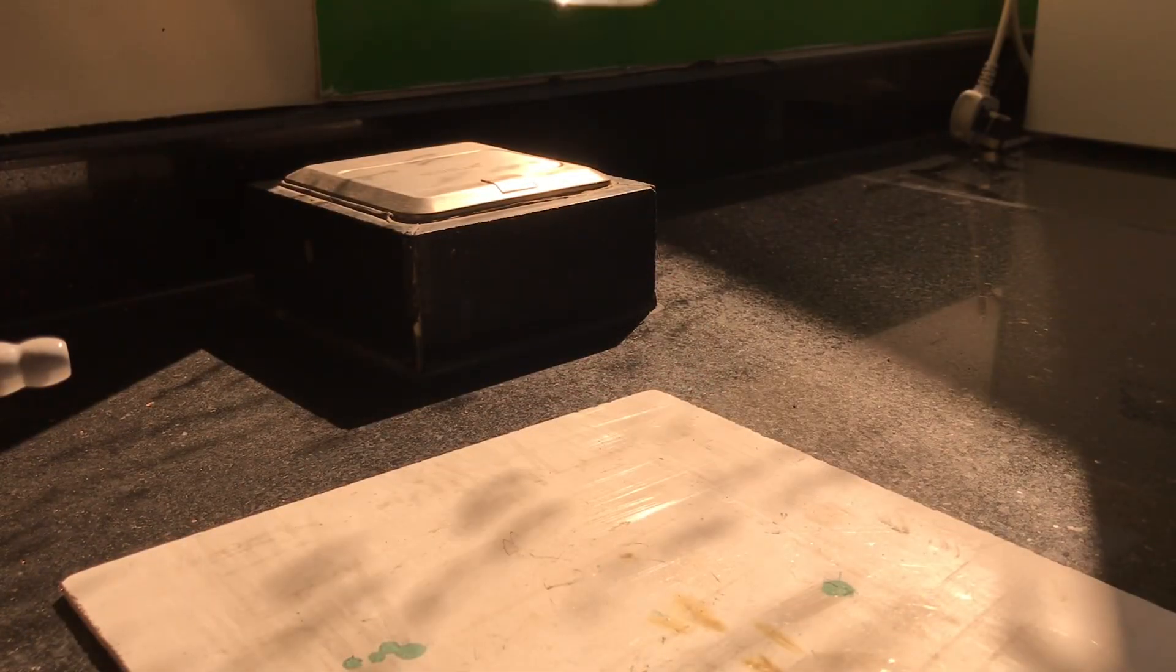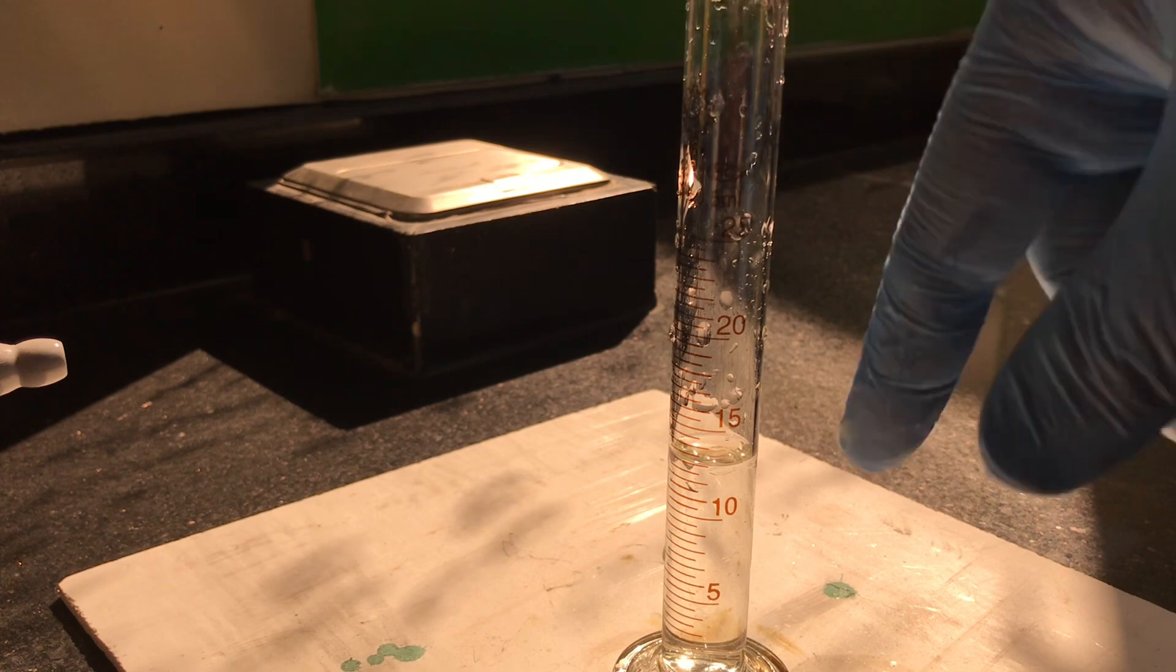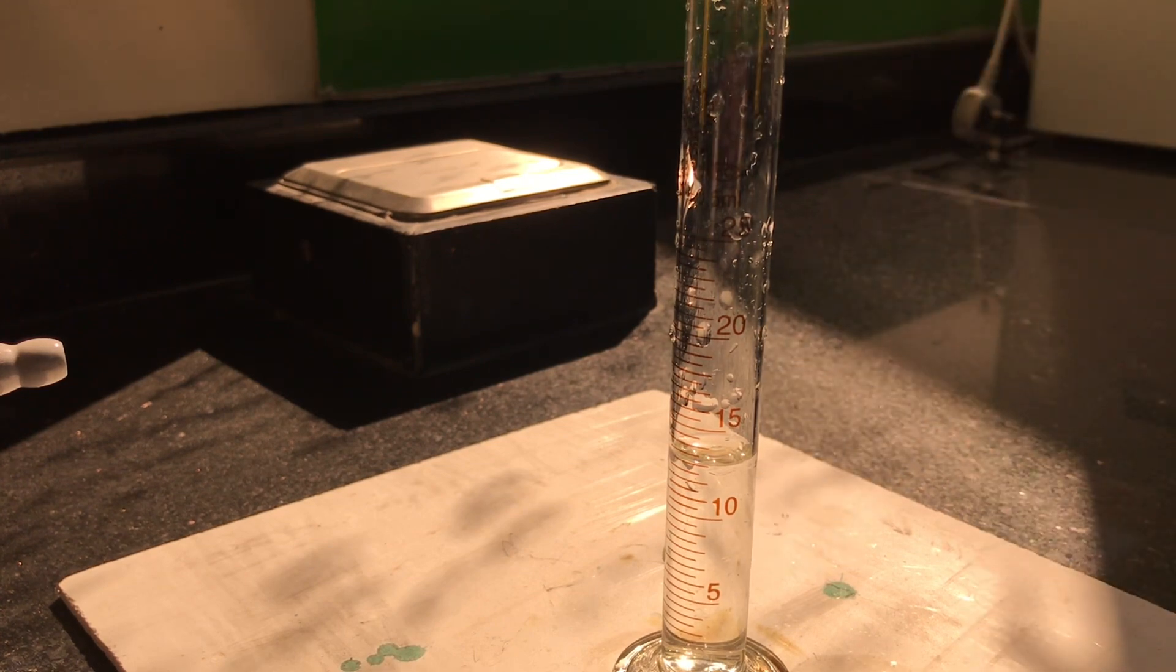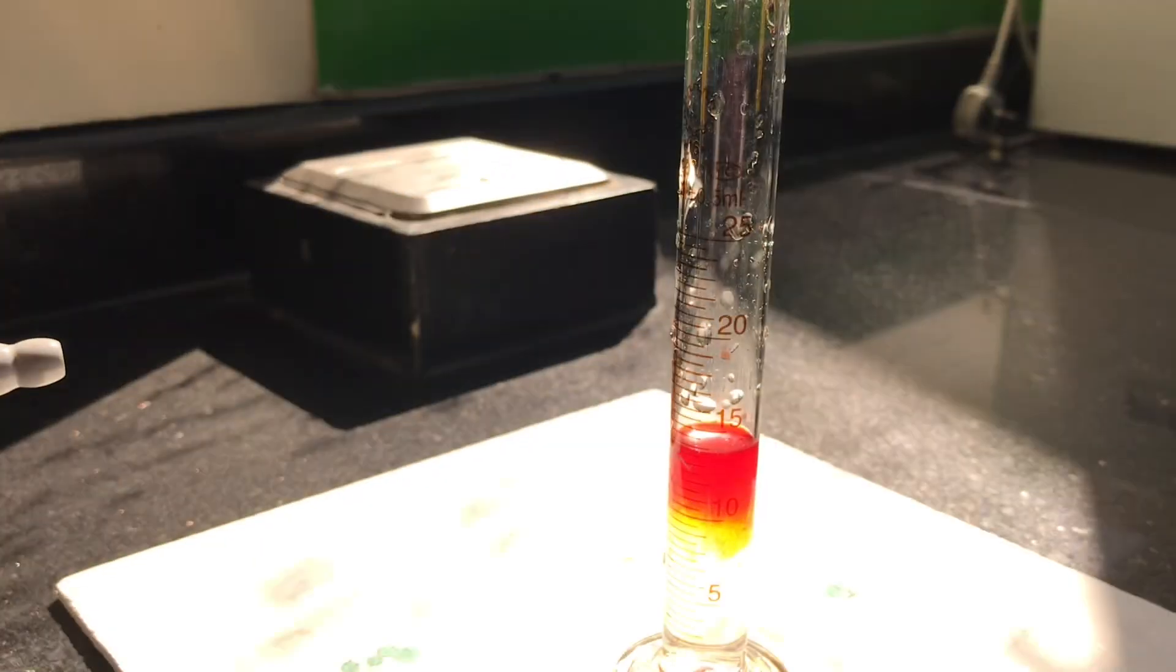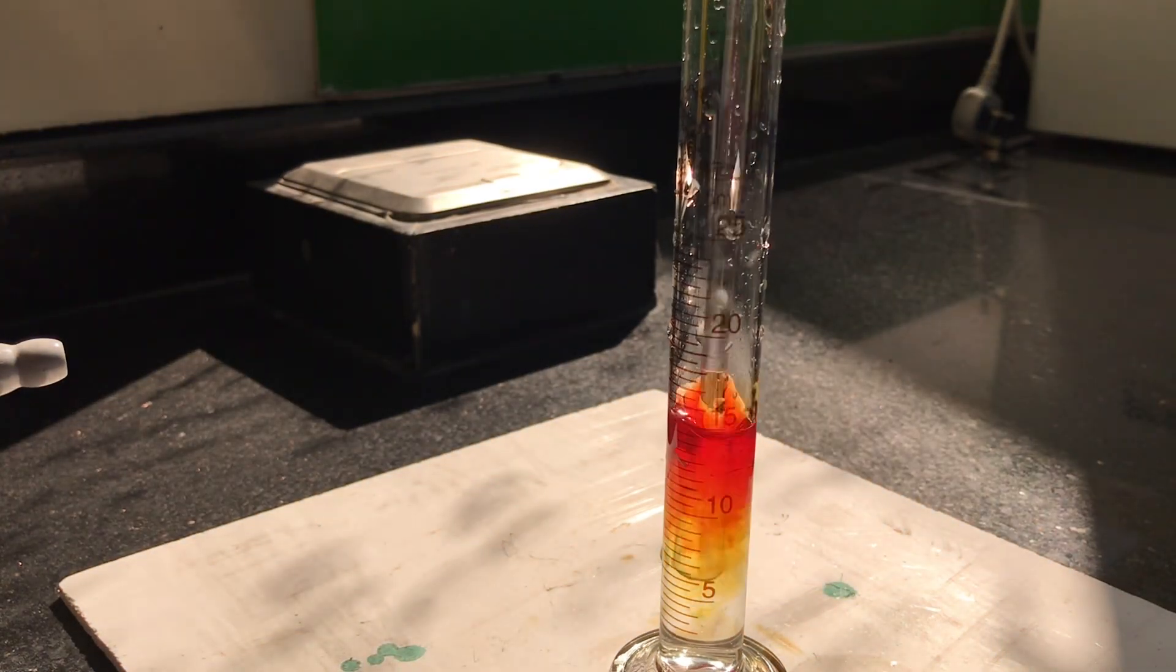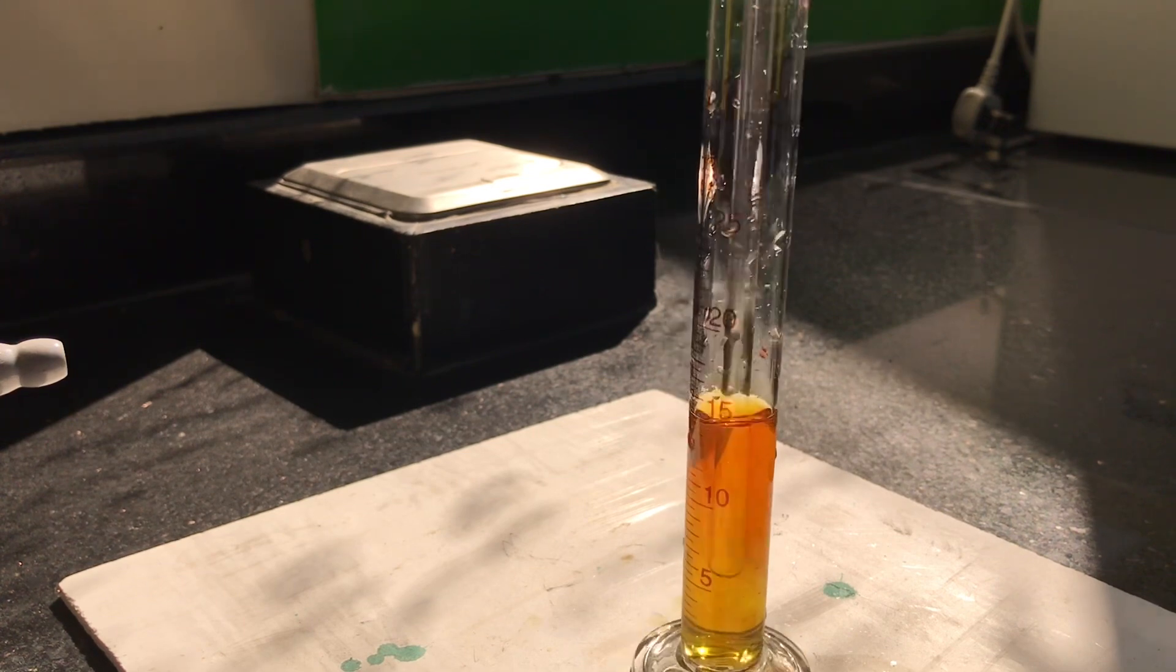So the first thing I'm going to do is start off with some water. I've got just between 10 to 15 millilitres, centimetres cubed of water. I'm going to add some universal indicator. It will help if you have a glass rod at hand. You can give that a little bit of a stir. Mix that around and you should get your characteristic green colour.